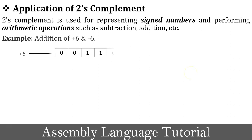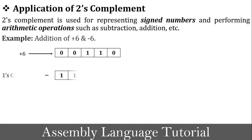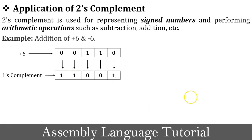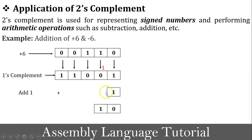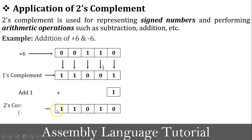To find −6 in binary, we find the 1's complement of 00110, which is 11001, then add 1. Adding 1: 1 plus 1 is 0 with carry; 1 plus 0 is 1, no carry; remaining bits are 0, 1, 1. So the 2's complement result 11010 represents −6. This demonstrates 2's complement for representing signed numbers.